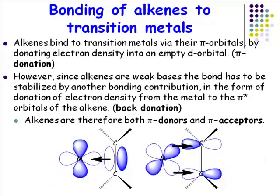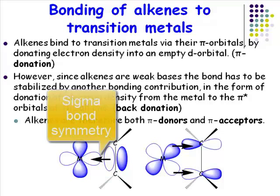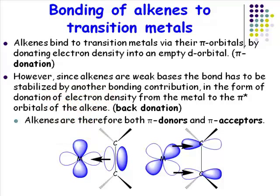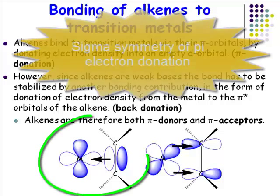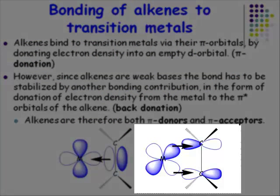Those are the important interactions. If we are strict about the symmetry of this donor interaction with respect to the metal-ligand axis, it is a sigma interaction. The alkene is called a pi donor in the sense that it donates pi electron density to the metal, but the symmetry of the bond itself is sigma. The acceptor interaction involves pi star orbitals and has pi symmetry with respect to the metal-ligand axis.